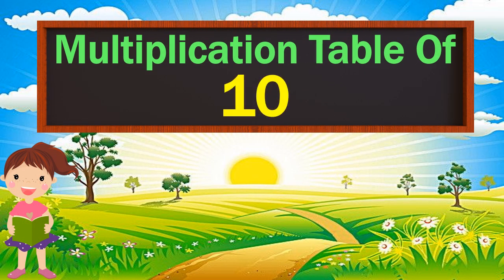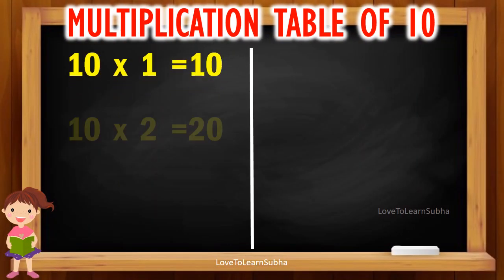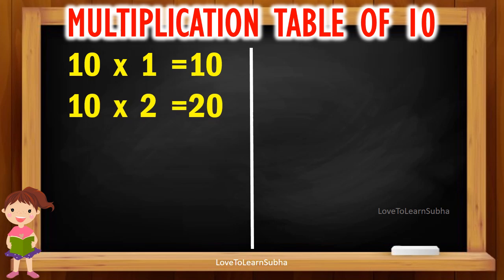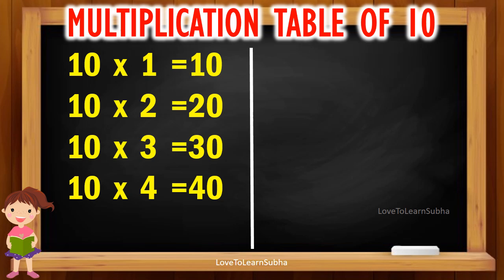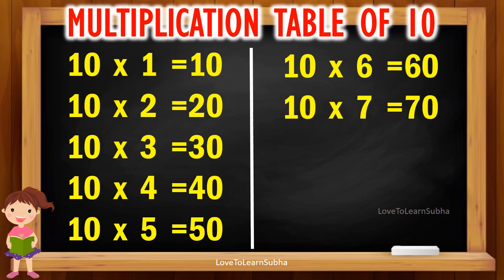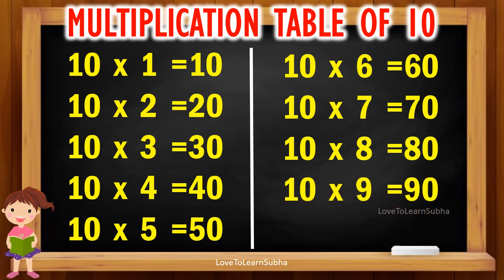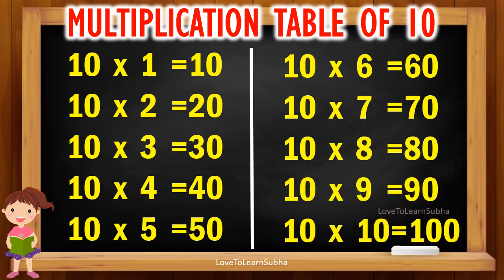Multiplication table of 10. 10 1s are 10, 10 2s are 20, 10 3s are 30, 10 4s are 40, 10 5s are 50, 10 6s are 60, 10 7s are 70, 10 8s are 80, 10 9s are 90, 10 10s are 100.